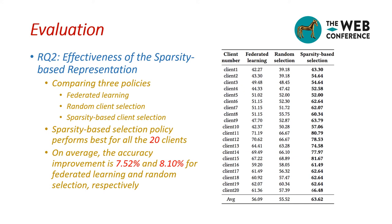For RQ2, we test the effectiveness of our sparsity-based representation. Specifically, we evaluate this representation by comparing three policies: federated learning, random client selection, and our sparsity-based client selection, using MobileNetV2 on Office Home as an example. From the table, we can clearly see that our sparsity-based selection policy performs the best for all 20 clients by a large margin. On average, the accuracy improvement is 7.52% and 8.1% over federated learning and random selection, respectively, which validates the utility of the extracted sparsity vectors.